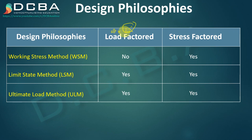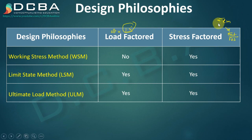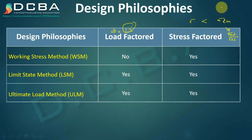Secondly, the stress is going to be factored — the material stress, Sigma_material, is going to be divided by a factor of safety, and this gives you your limiting stress, Sigma_limiting. Care is taken in the design that whatever stress is coming in your structure should always be less than your limiting stress. This is the basic concept of design.